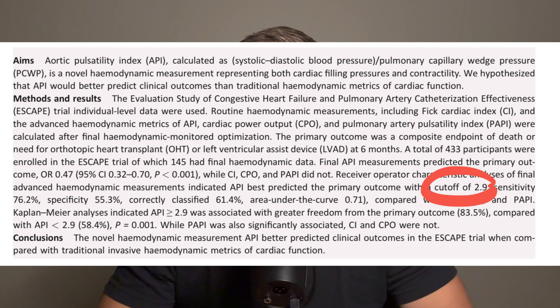Those were patients in cardiogenic shock, but what about patients who are not in cardiogenic shock? In a different study, they found that the cutoff to reach a composite endpoint of death, need for heart transplantation, or LVAD at six months was greater than or equal to 2.9. That number is higher than the 1.45 cutoff — which is true — but it's not just the number that makes me question this a bit.